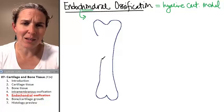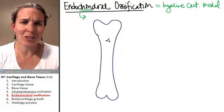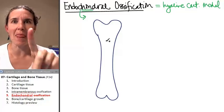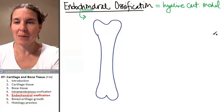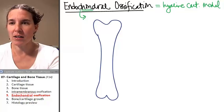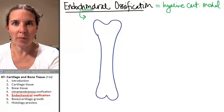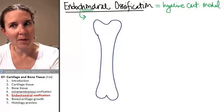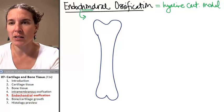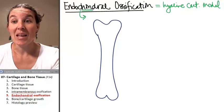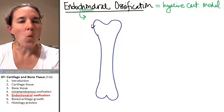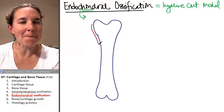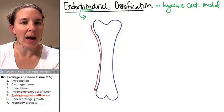Doesn't that look like a long bone? Of course it does. Is it a long bone? No, it's made out of hyaline cartilage. Your bones better not be made out of hyaline cartilage. What does that mean that it is surrounded by?